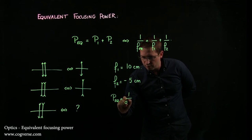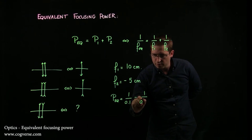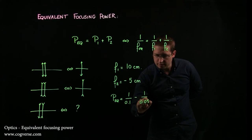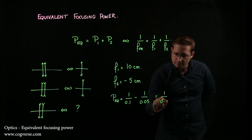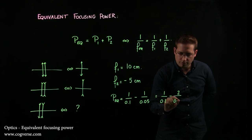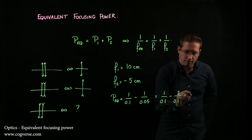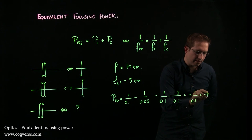That's 1 over 0.1 minus 1 over 0.05, which is 1 over 0.1 minus 2 over 0.1. And therefore it's minus 1 over 0.1, in other words it's minus 10 centimeters.